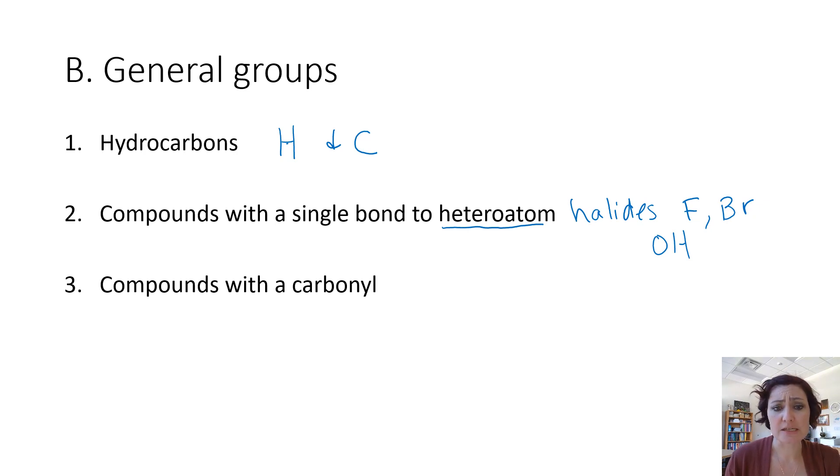The third classification is a compound that contains a carbonyl, and this can look different. But a carbonyl, as we will come to learn soon, is a carbon double bonded to an oxygen. There's a whole class of functional groups that have the presence of this carbonyl, a C double bonded to O. Those are the three general classifications for functional groups.